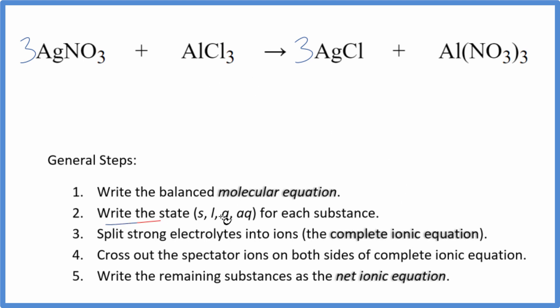Now we need to write the states for each substance. If you know your solubility rules, nitrates are very soluble. Put an aq, that's going to dissolve and dissociate into its ions. Chlorides also, almost always, are going to be soluble with the exception of silver chloride. Always be careful with silver.